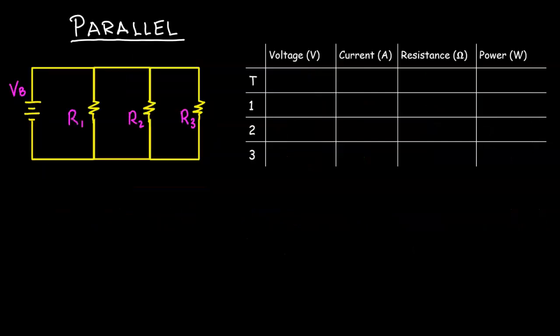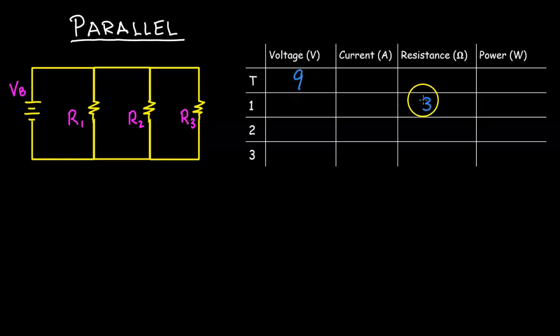Now let's look at a parallel circuit. In a parallel circuit there is more than one path. In this circuit, the battery has a voltage of 9 volts, Resistor 1 has a resistance of 3 ohms, Resistor 2 has a resistance of 4 ohms, and Resistor 3 has a resistance of 6 ohms.